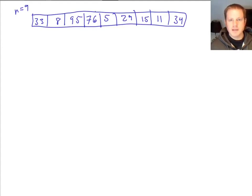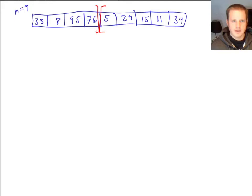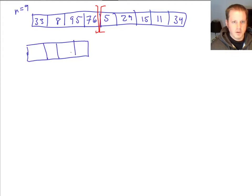I picked an array of size nine to point out that whenever we cut something down the middle but it has an odd size, it's not going to be exactly in the middle. The way this code is written, it picks the smaller array for the left-hand side, but ultimately that doesn't really matter. Now we've split this up — we have one array of size four and one array of size five.